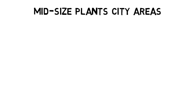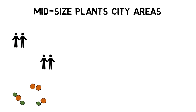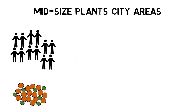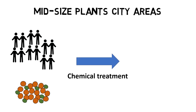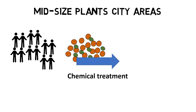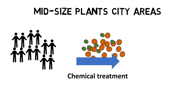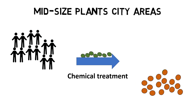More people equal more sludge volume. As sludge hauling is expensive and a lot of sludge is available, it makes economic sense to treat the sludge chemically to remove toxic components and to use most of it as fertilizer.